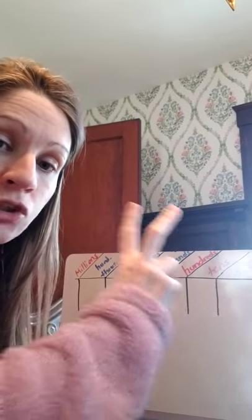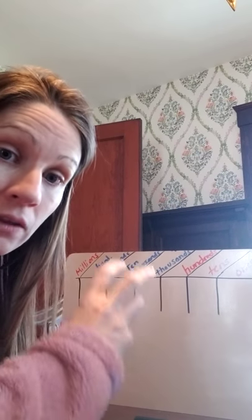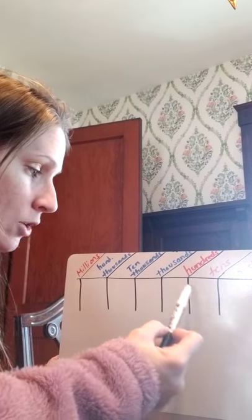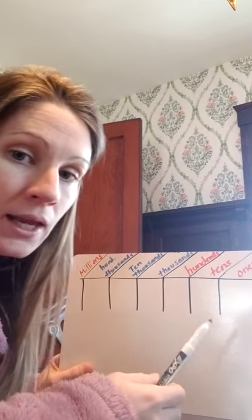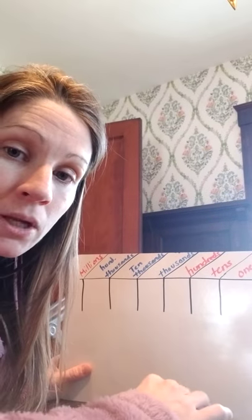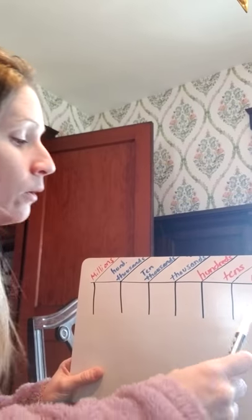If I count all the way up to twenty, that's two groups of ten. If I count to thirty, that's three groups of ten. So I can have digits zero through nine in each of these columns — I can't have two digits in one column, because once you have that, you're bundling into a new group.